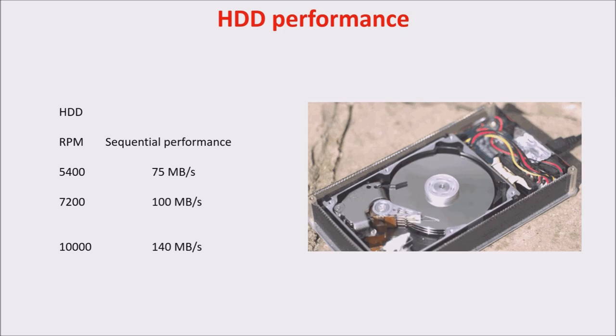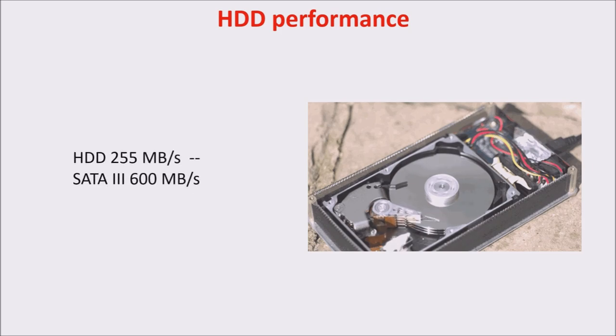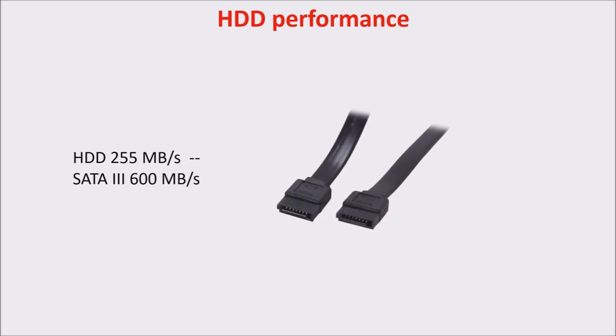Better HDD can improve their performances up to 255 MB per second, which is always lower than the SATA3 cable performances, which is more or less 600 MB per second. SATA3 is the cable which connects HDD with the motherboard.